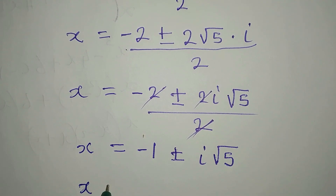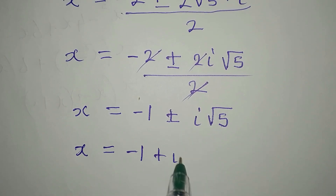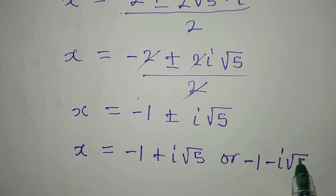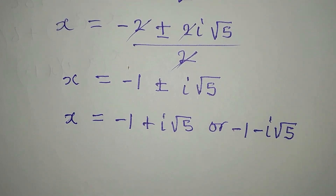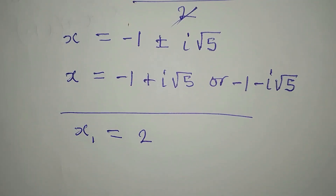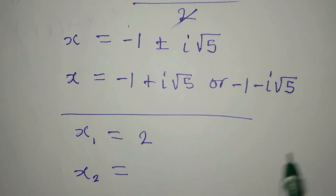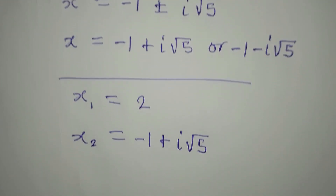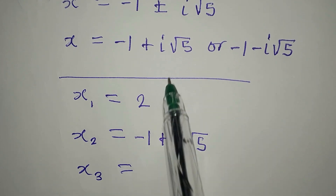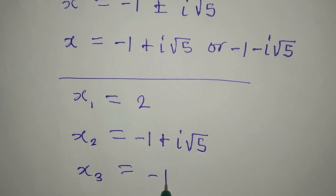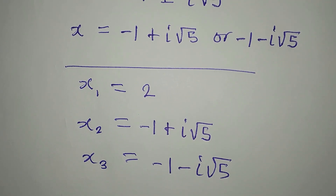This is a two-in-one solution: x equals minus 1 plus i root 5, or x equals minus 1 minus i root 5. Bringing all three solutions together: x₁ equals 2, x₂ equals minus 1 plus i root 5, and x₃ equals minus 1 minus i root 5. These are the three solutions to the equation.